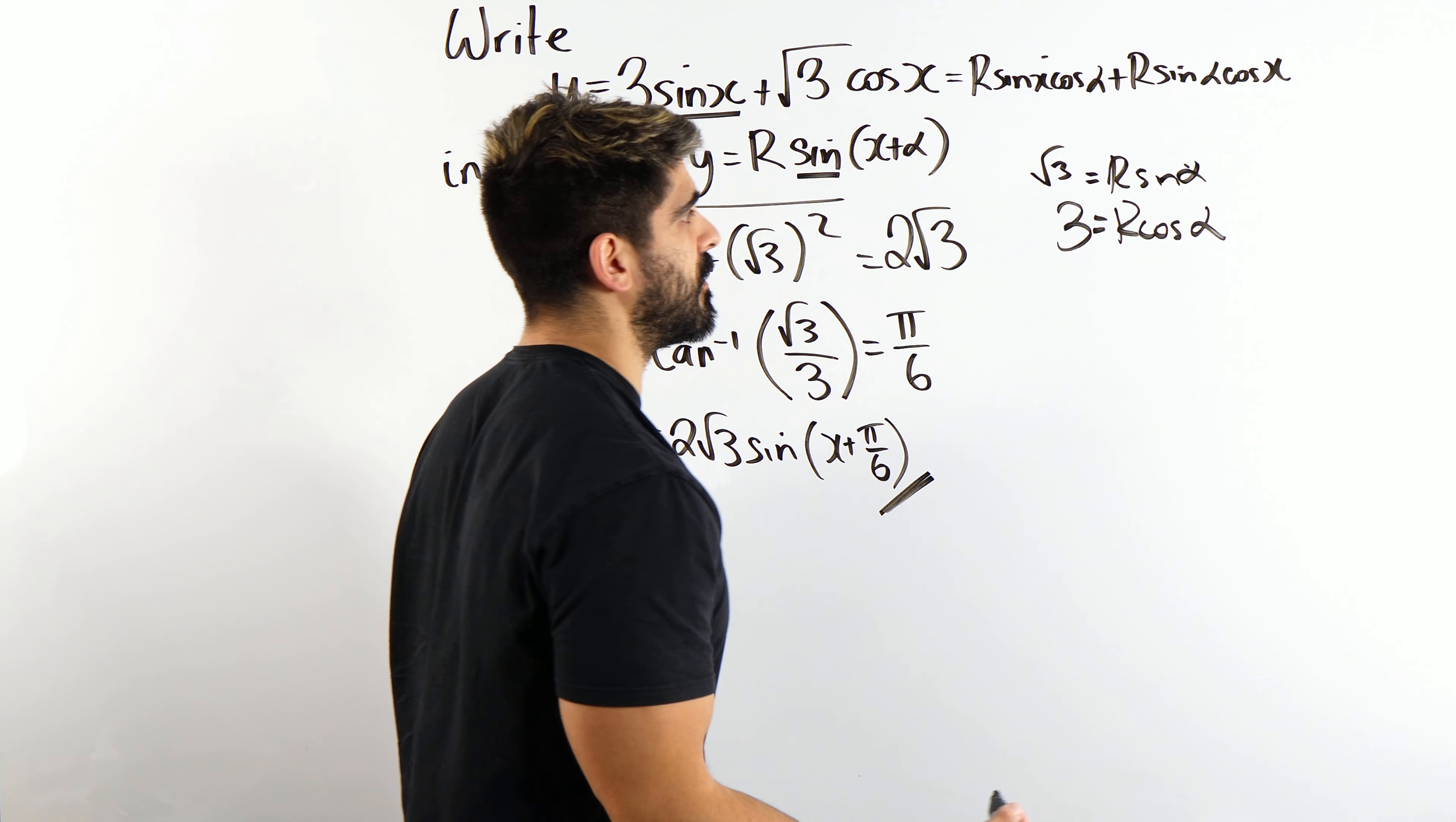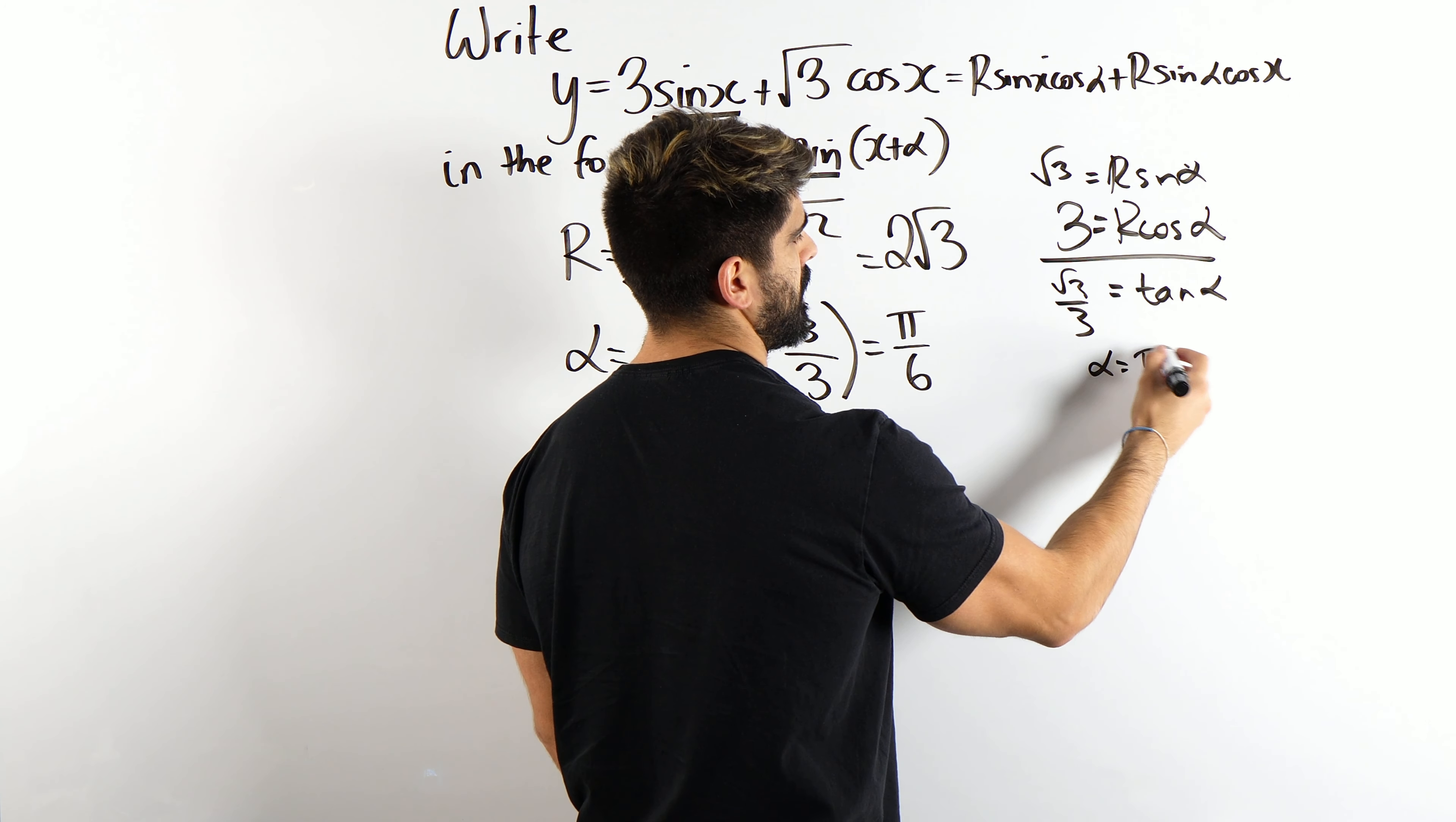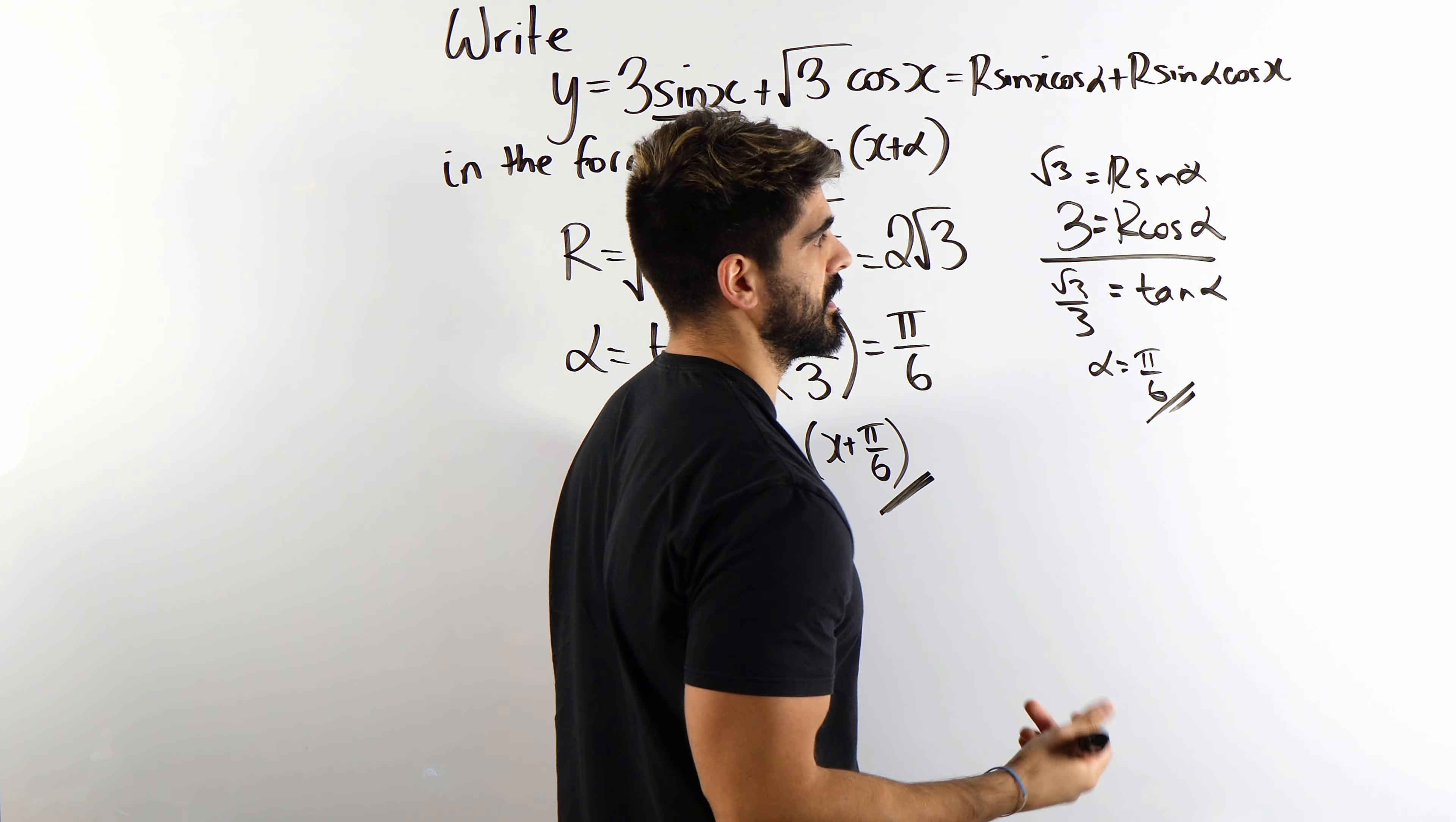Then you've been taught to divide. Tan alpha is root 3 over 3. And then you get the same thing, alpha is root 3 over 6. And then depending on who your teacher is, but they might have just said look you just do the Pythagorean identity.